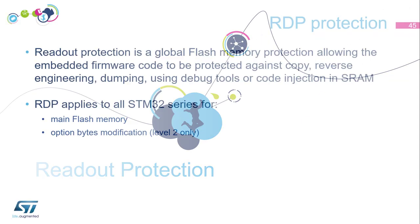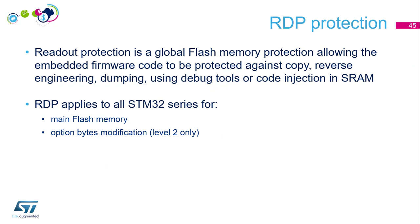Readout protection is a global flash memory protection allowing the embedded firmware code to be protected against copy, reverse-engineering, duping using debugging tools, or code injection in SRAM. To sum up, you protect the flash contents from being accessed via the debugging link or SRAM with code injection.